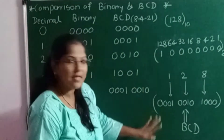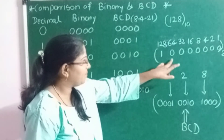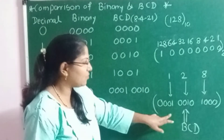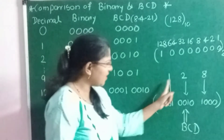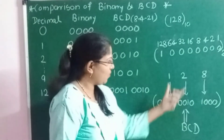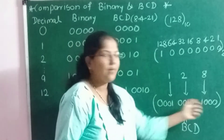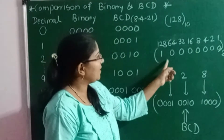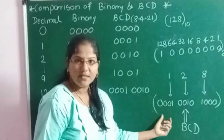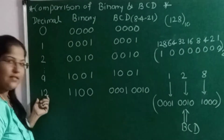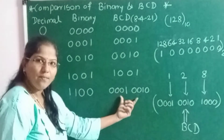Now you can see the difference between binary and BCD. When representing any decimal number in binary, it requires fewer bits compared to BCD. Because in BCD we replace each digit with 4 bits. For 128, only 3 decimal digits are given, but 12 bits are required in BCD, while only 8 bits are required in binary. Similarly for 12, binary requires only 4 bits while BCD requires 8 bits.